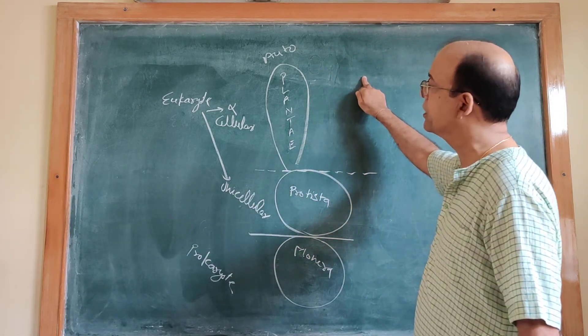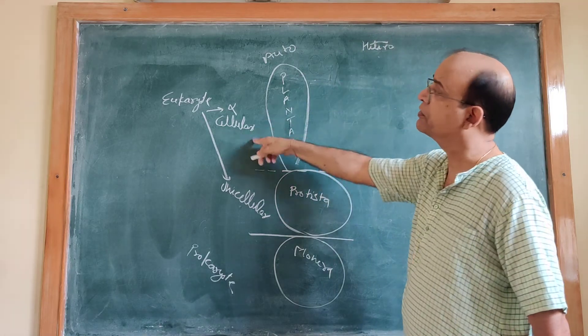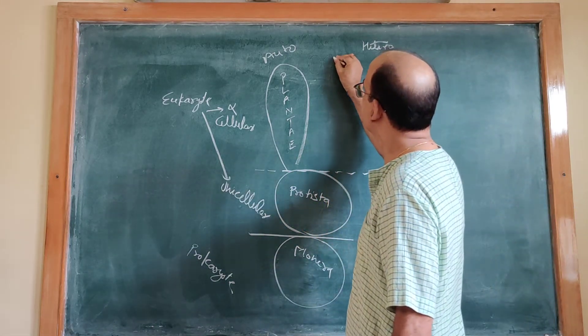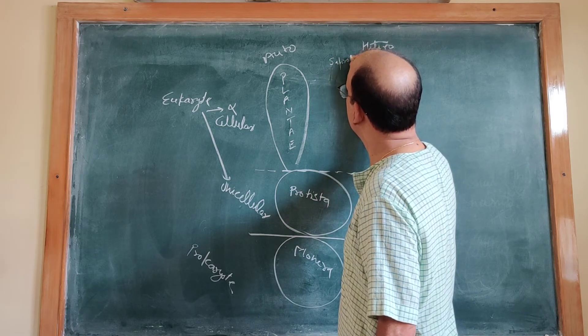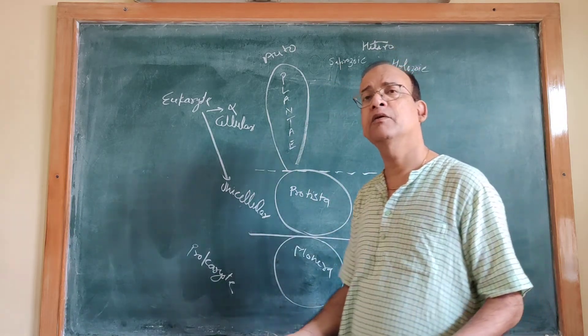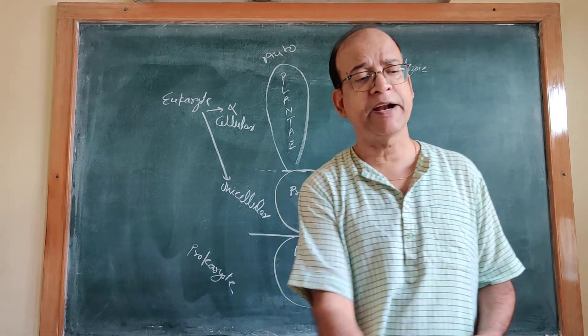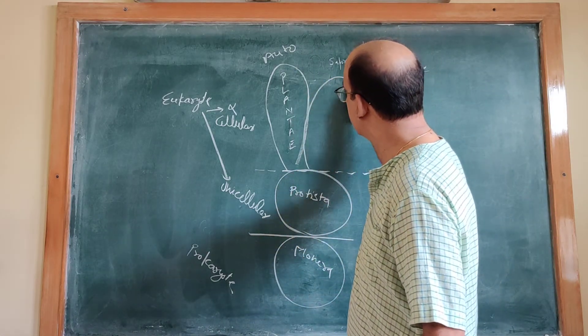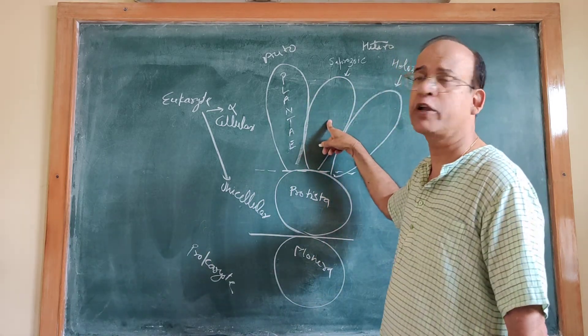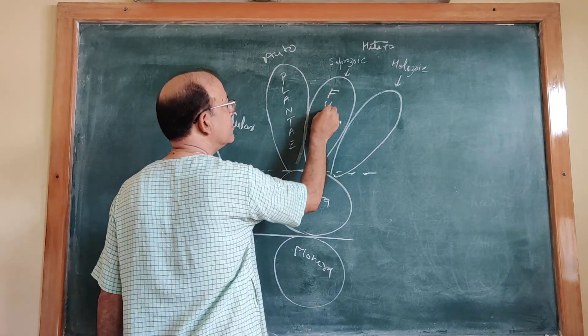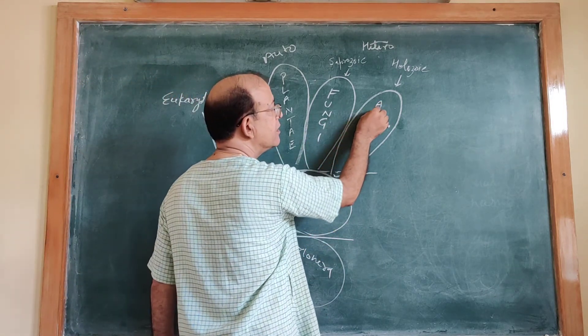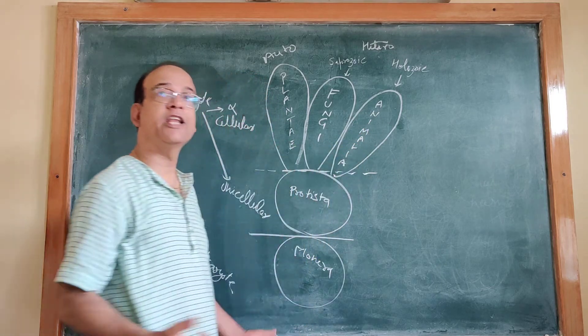This group is heterotrophic multicellular eukaryotes. Now heterotrophs you further divide. Saprozoic organisms, which absorb dead and decaying organic materials, you call them Kingdom Fungi, and this group you call Kingdom Animalia.